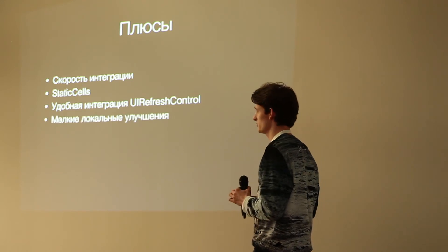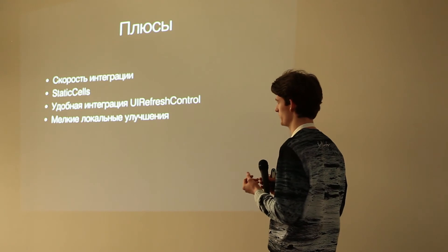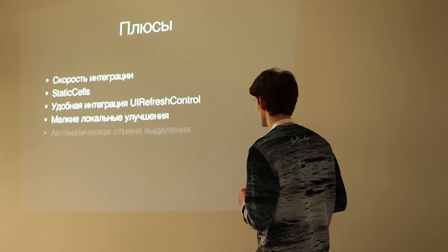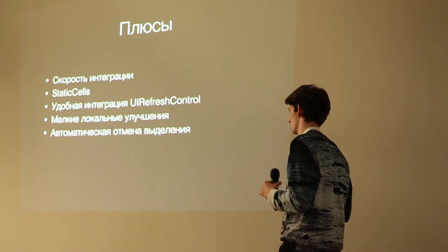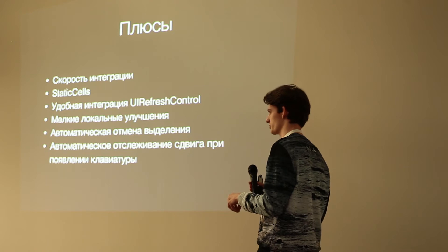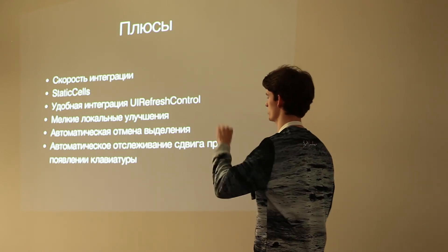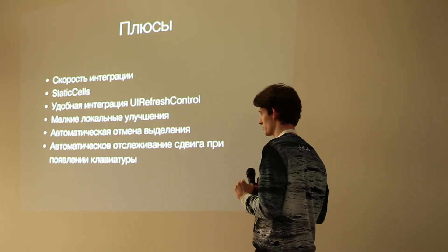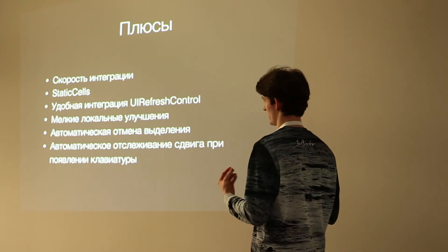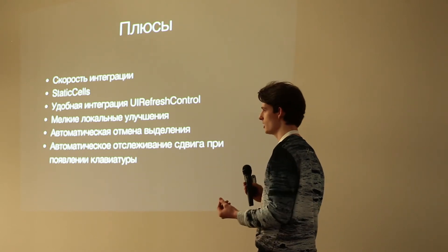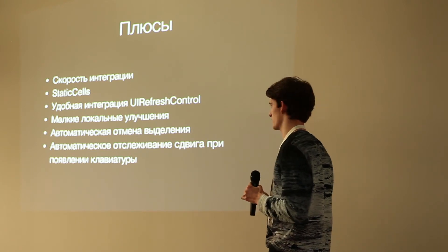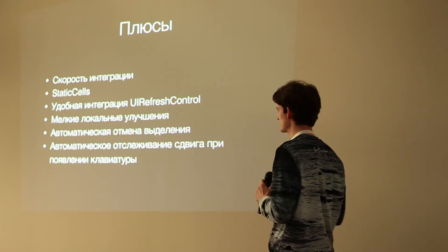Среди мелких локальных улучшений: когда viewWillAppear или viewDidAppear вызовется, таблица перестроится — на обычном ViewController пришлось бы делать это вручную. Два плюса, которые часто упоминают блогеры: автоматическая отмена выделения при переходе на новый контроллер — вы нажали на ячейку, перешли, и она автоматически снялась. И последний плюс — автоматическое отслеживание сдвига при появлении клавиатуры: если у вас есть text field в ячейке, вы нажали на него, и клавиатура перекрыла полэкрана — TableViewController автоматически за этим следит.